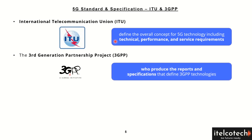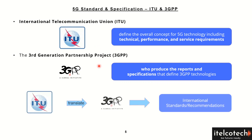These are then further specified by another governing body, which is 3GPP, who produces the reports and specifications that define 3GPP technologies on the basis of guidelines driven by the ITU. So ITU translates all the performance and service requirements to 3GPP, which further produces the reports and specifications.